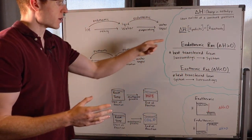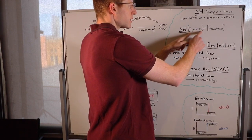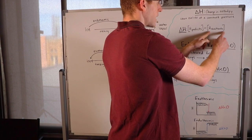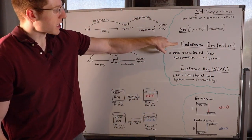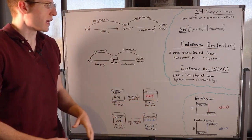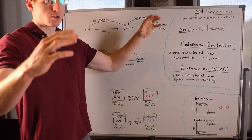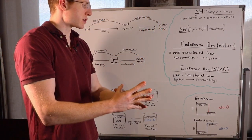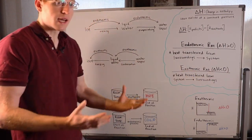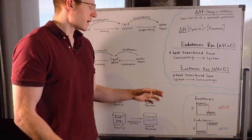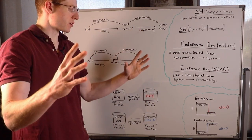The way that we calculate delta H, or the change in enthalpy, is by taking the enthalpy of the products and subtracting the enthalpy of the reactants from it. For an endothermic reaction, delta H is positive or greater than zero, meaning heat is transferred from the surroundings into our system. An exothermic reaction is when delta H is negative or less than zero, meaning heat is transferred from our system out into the surroundings.